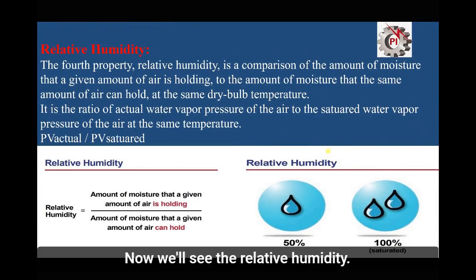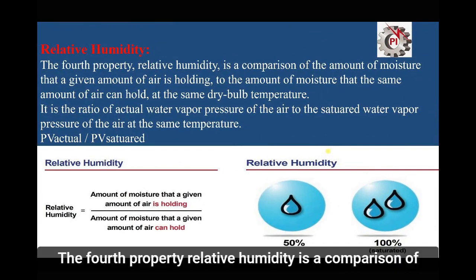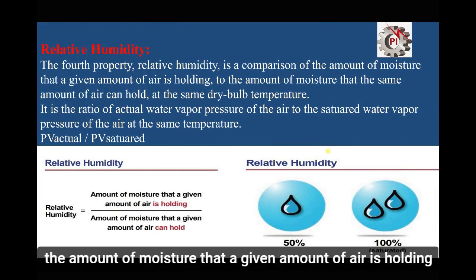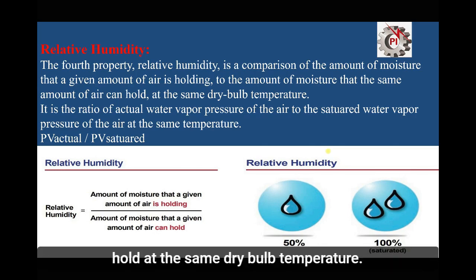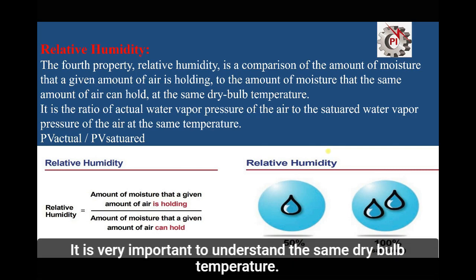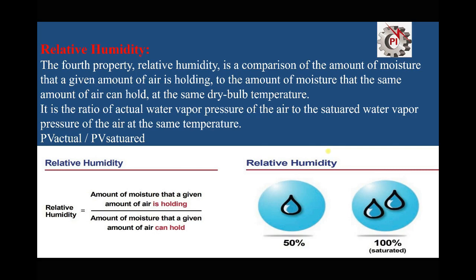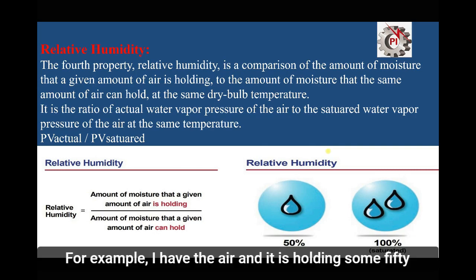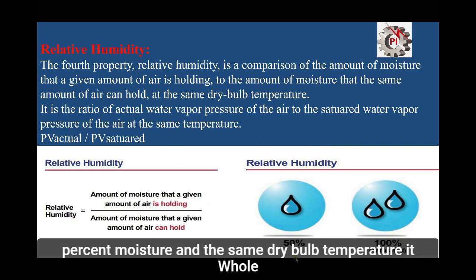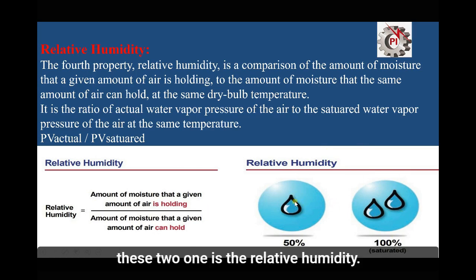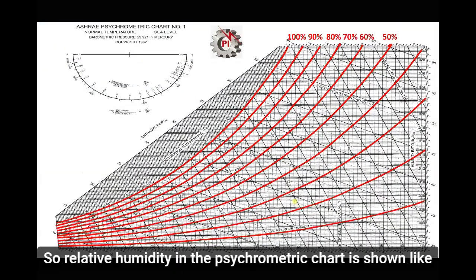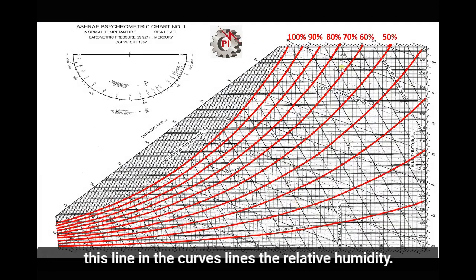The fourth property is relative humidity — the comparison of the amount of moisture a given amount of air is holding to the amount it can hold at the same dry bulb temperature. For example, if air holds 50% of the moisture it could hold at saturation, the relative humidity is 50%. In the psychrometric chart, relative humidity is shown as curved lines.